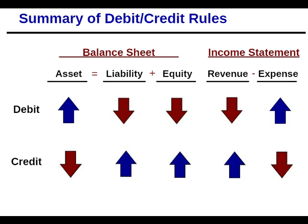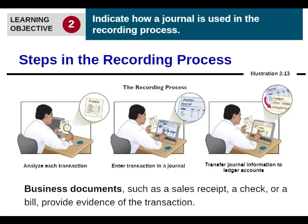Now moving on to what we're really here for: journalizing transactions. Steps one, two, and three of the accounting cycle are known as the recording process, or bookkeeping. If you're going to get an introductory accounting job, that's basically what you'll be doing — bookkeeper. You analyze the transactions first, then write down what happened in the journal, and then post to the ledger, which is transferring from the journal to the ledger. Each account has its own ledger, and we'll talk about that in a future video.